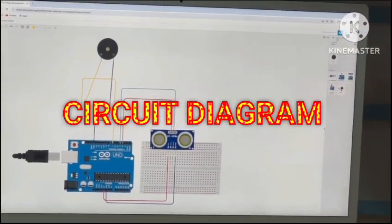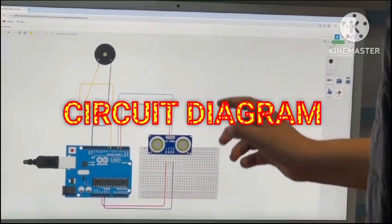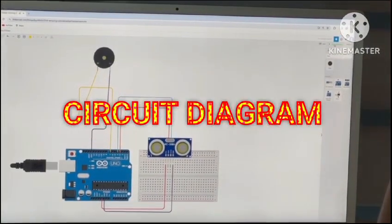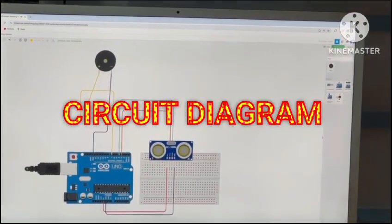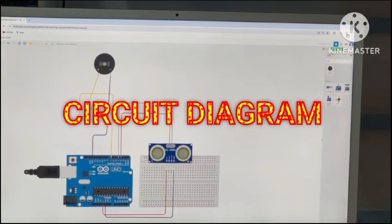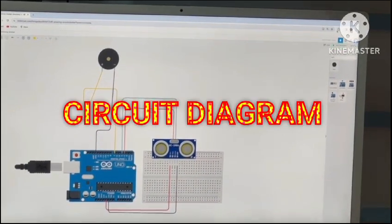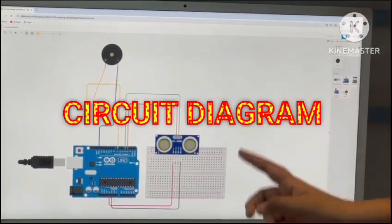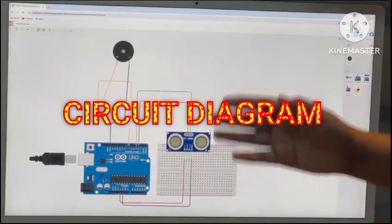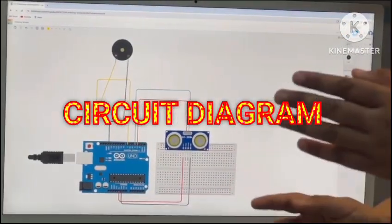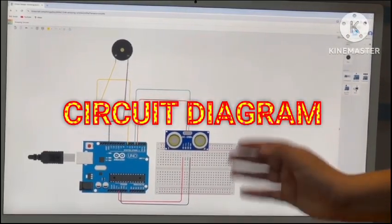Now I am starting with the simulation. When I come in front of this ultrasonic sensor, it starts buzzing. This means that the circuit is working whenever it senses an object in front of it or near it.